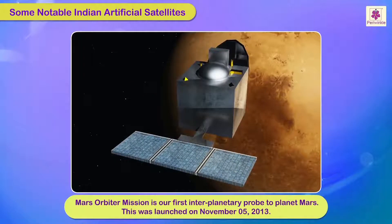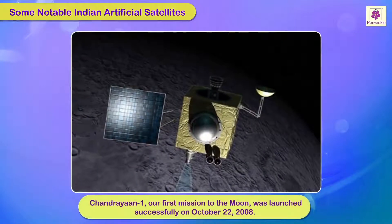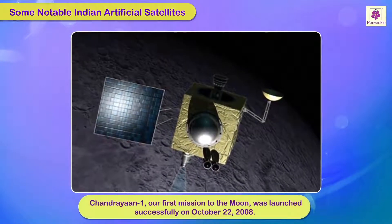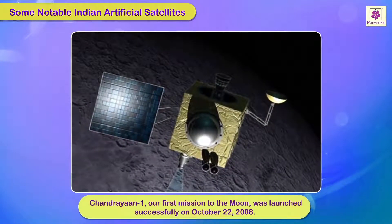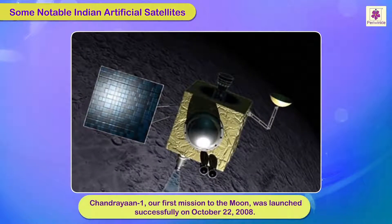The Mars Orbiter Mission is India's first interplanetary probe to planet Mars, launched on 5th November 2013. Chandrayaan-1, India's first mission to the Moon, was launched successfully on October 22nd, 2008.